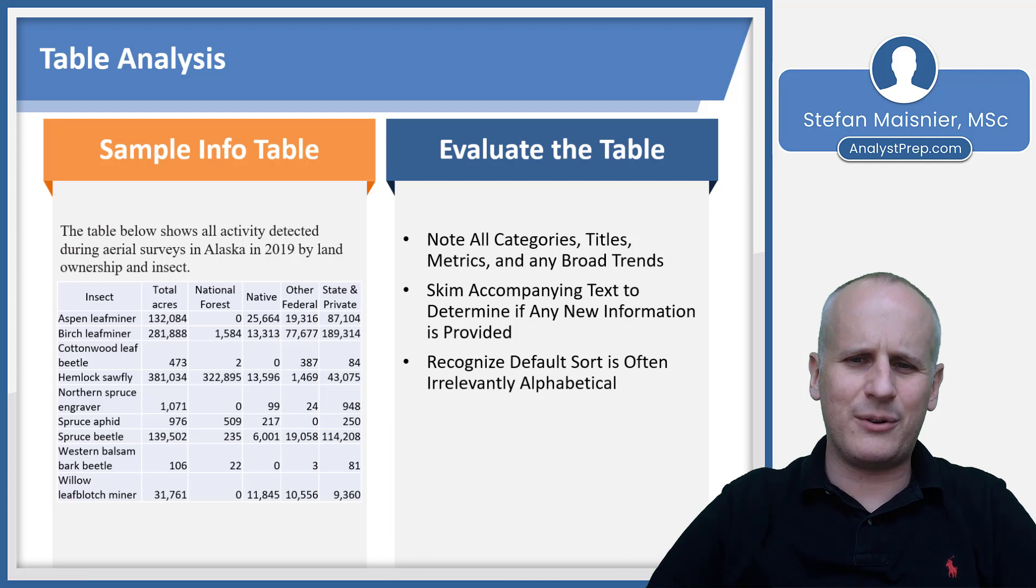Do recognize, however, that the default sort for these tables is often alphabetical, and that's pretty useless, because they're not going to ask as a question which of the insects is 10th in alphabetical order. It's just not going to happen, so that means we want to look for a more useful sort based on our initial investigation.